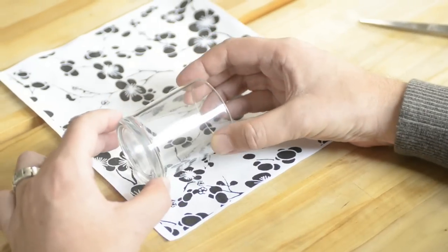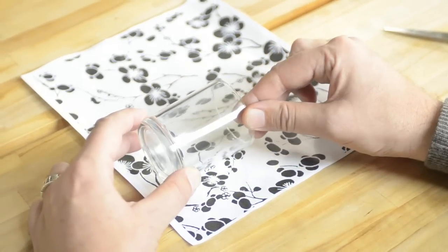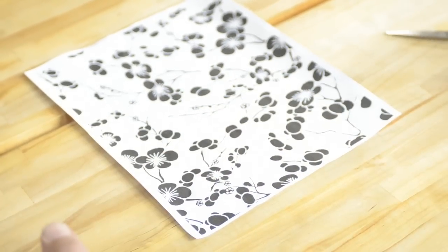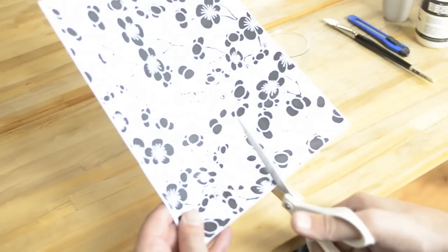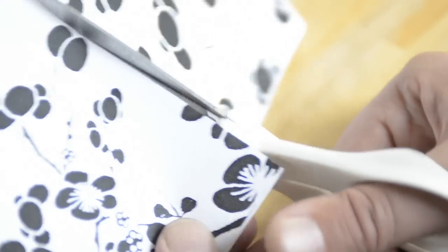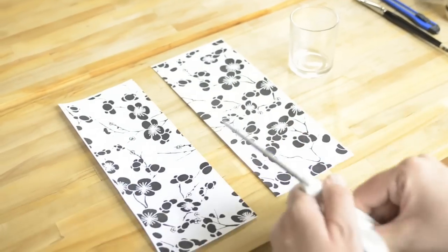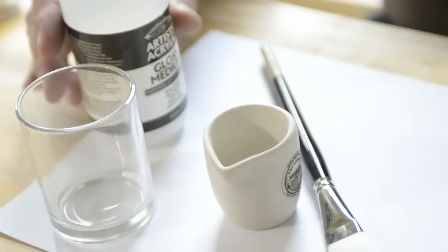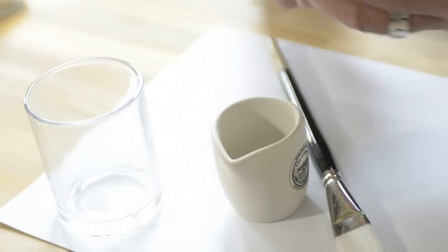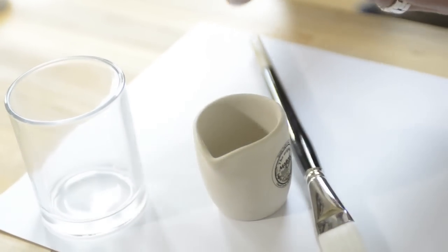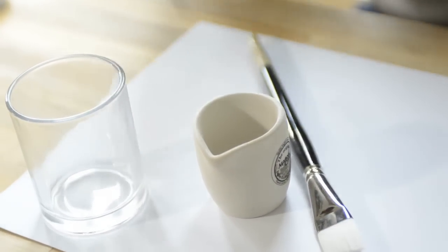So now we're going to cut the piece of paper in half, and the reason for that is that the votive candle holder is about half the width. Now with the medium, I'm just going to put a little bit. It goes quite a ways, so you don't need a whole bunch.